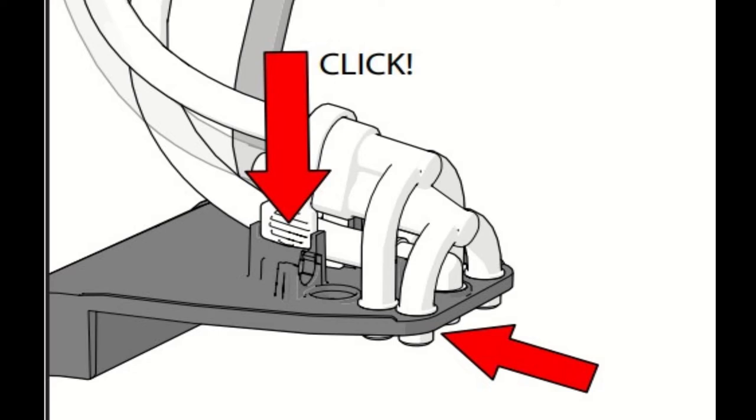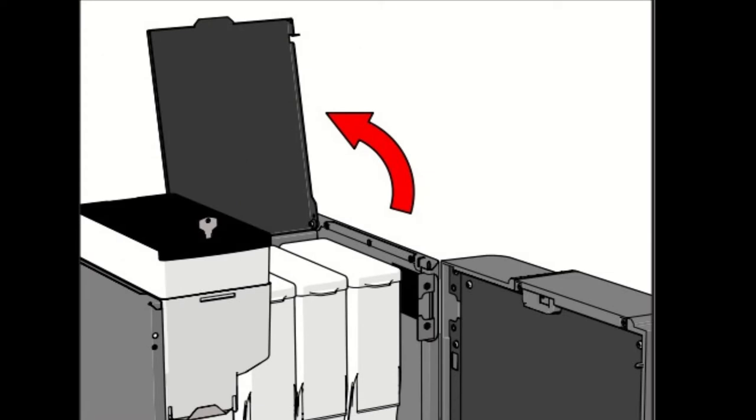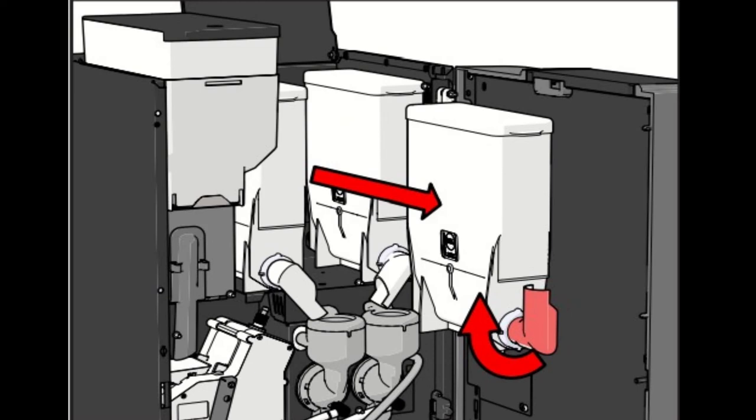To clean the instant mixers or mixing bowl, open the top cover of the machine. Turn the canister spouts up and remove the canister one by one.